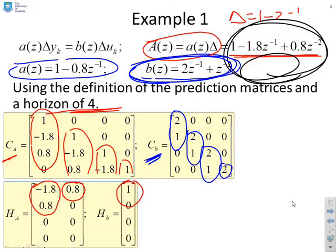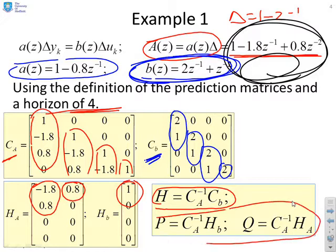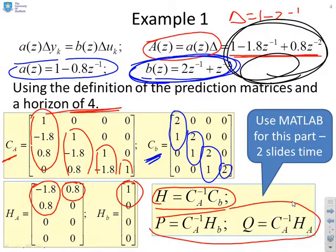Hopefully you can see very easy to generate these matrices. And if you needed to do it with code, that would be equally trivial. The definition of H, CA inverse CB, I can just write that down by inspection with any decent software and similarly for the definition of P and Q. We'll show this in MATLAB in a few slides' time.